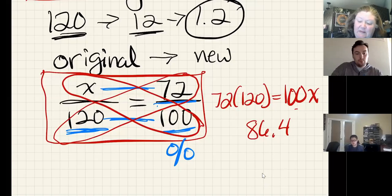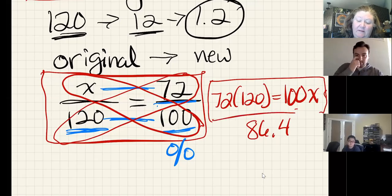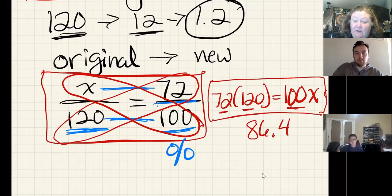What I didn't do was the calculation for this because I wanted people to be able to go off and find it on their own. When I calculated 72 times 120 and then I divided both sides by 100, I got 86.4.